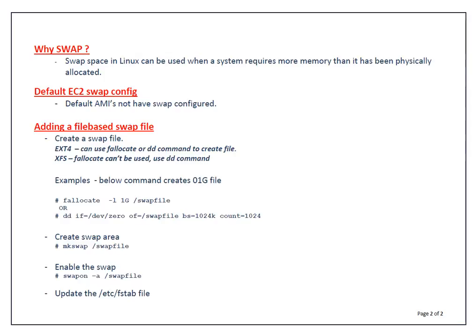Regarding default EC2 swap configuration — default AMIs, whether Red Hat AMI or CentOS AMI, don't have any swap configured, so you have to configure it yourself. You can add swap in two ways: one using a disk or LVM volume, or the other way is using a file, configuring it as a swap file, and adding it to your swap configuration. I am describing the procedure for file-based swap.